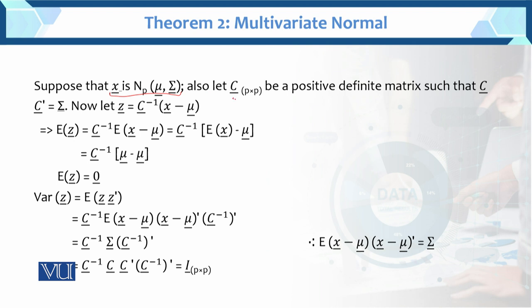Also, let c be a p×p matrix. It is a positive definite matrix such that c times c transpose equals sigma, the variance-covariance matrix. The supposition is: z equals c transpose c inverse times (x minus mu). We have this transformation here.